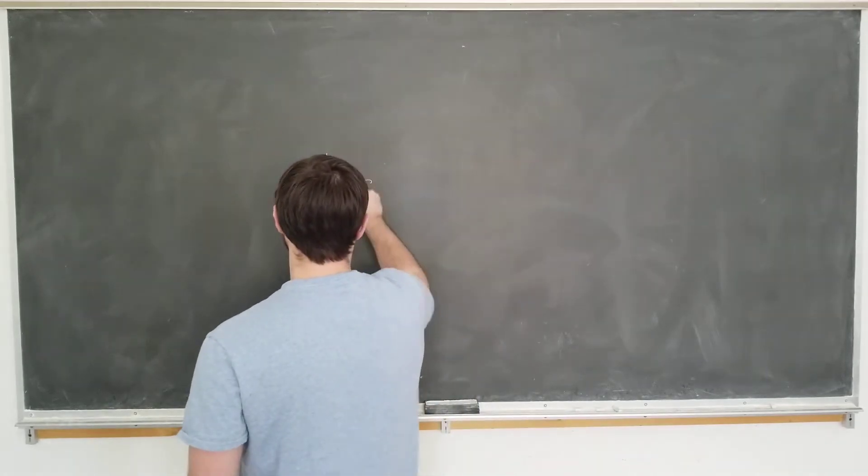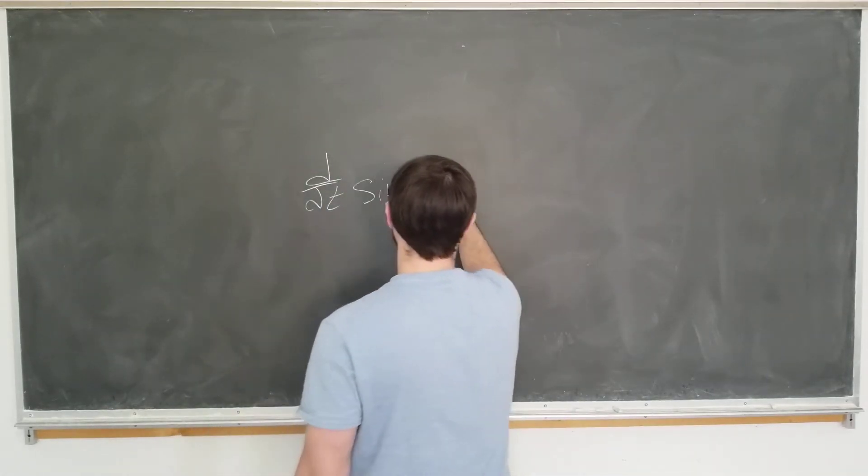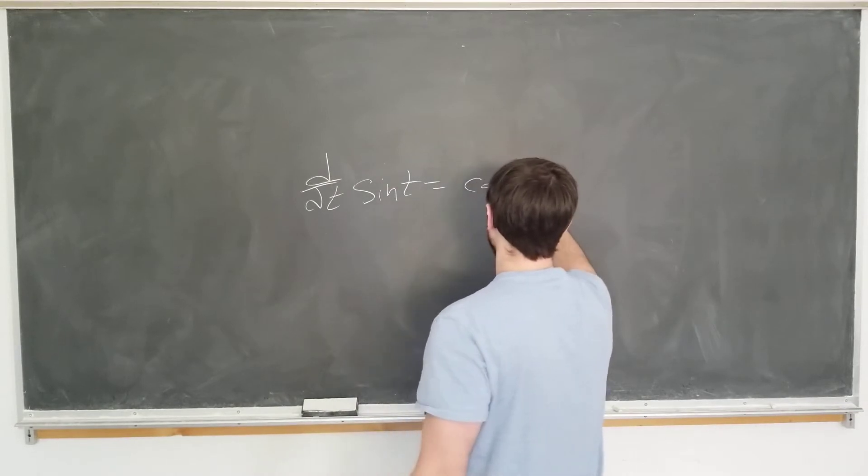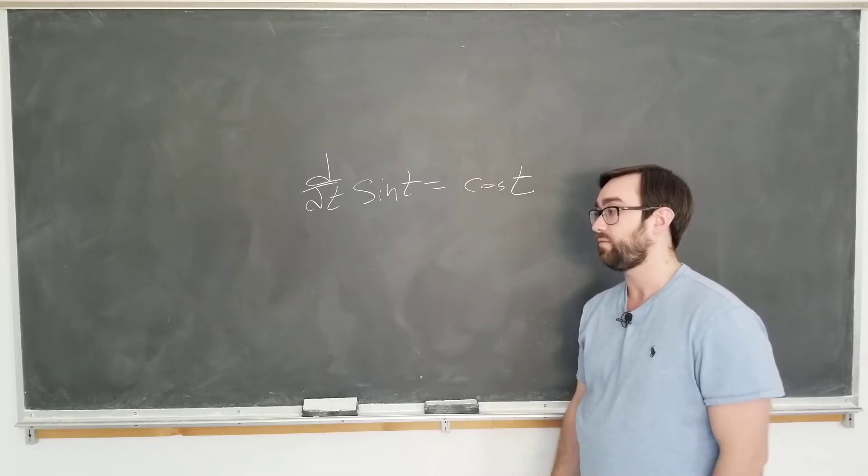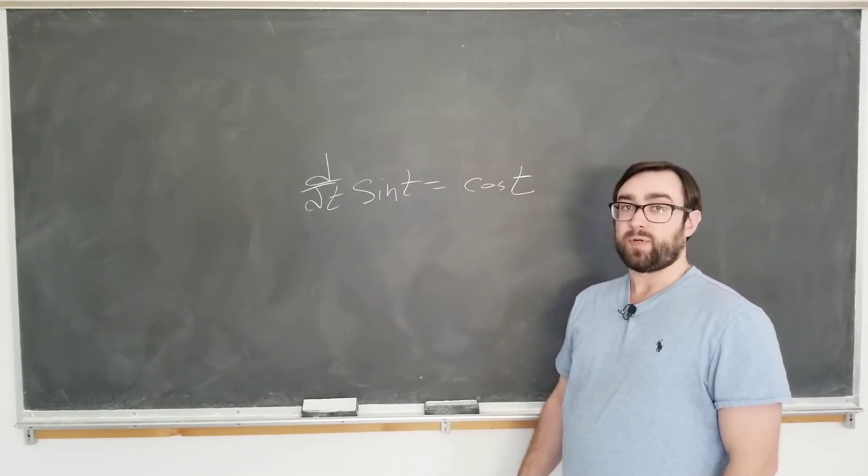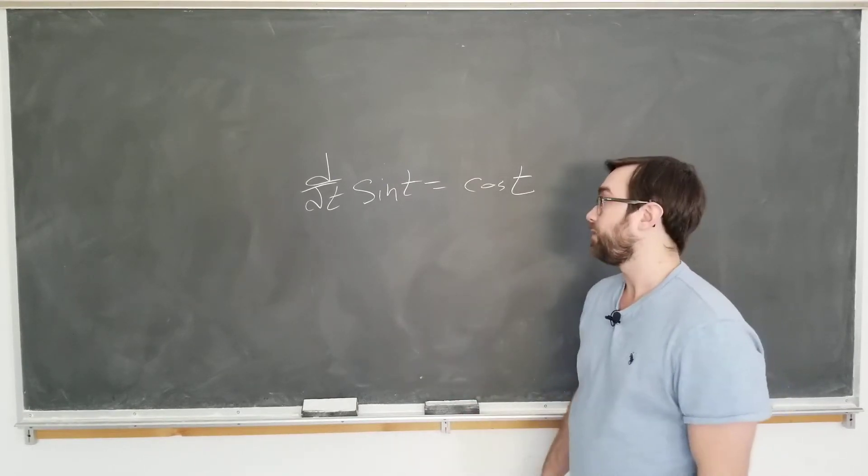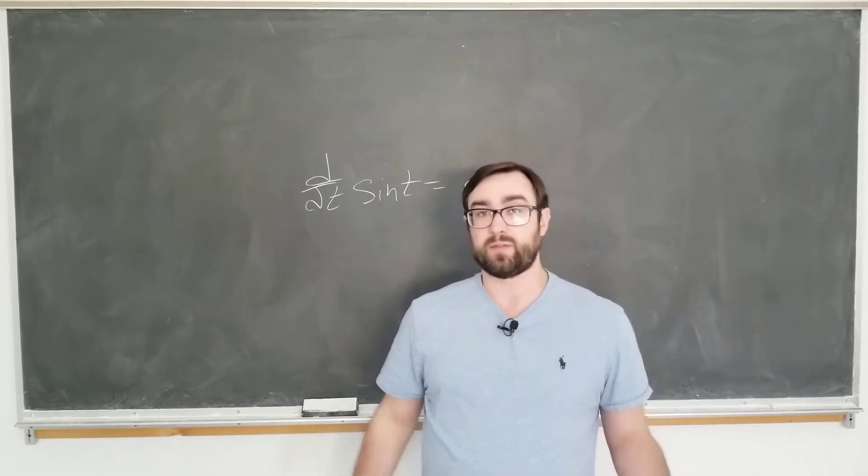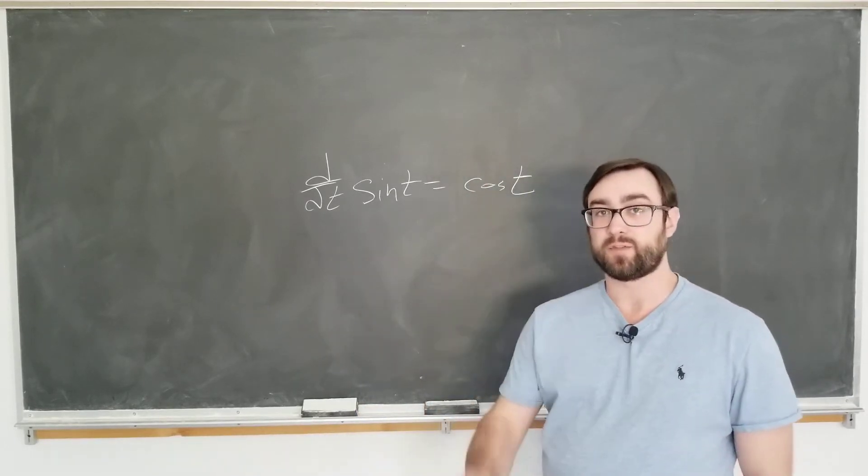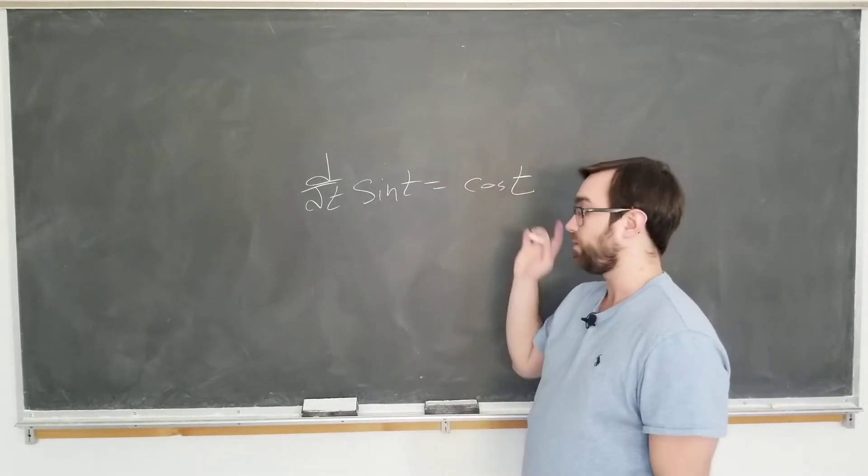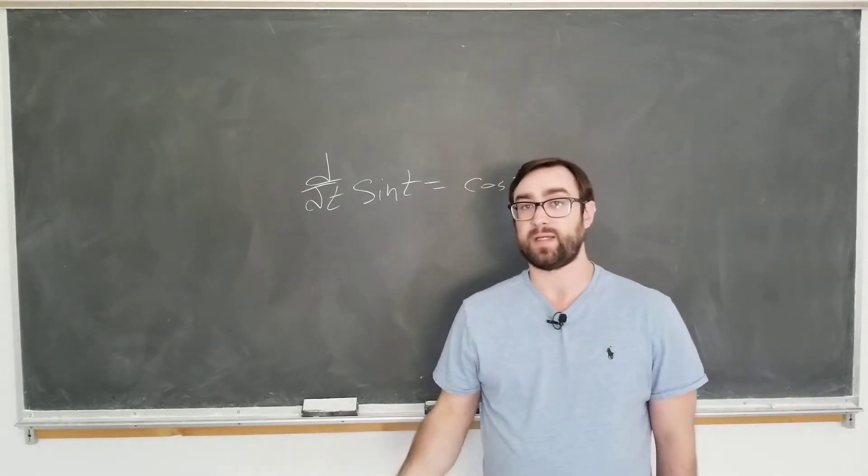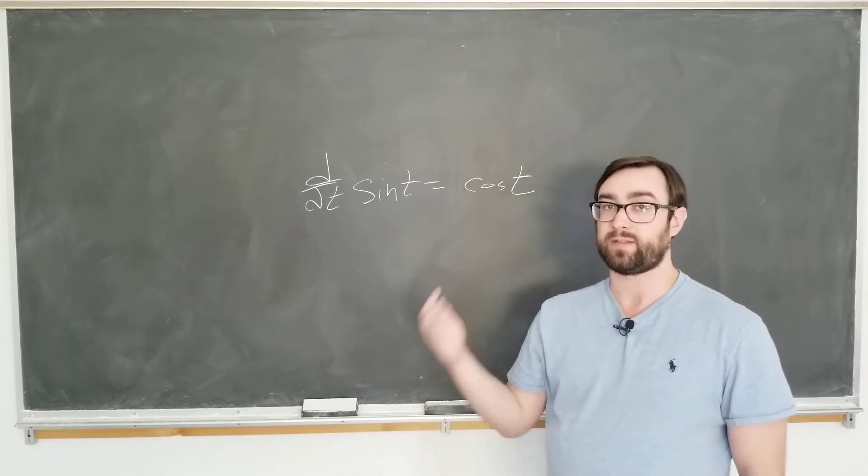d by dt of sine t is cosine t, using t here instead of x and you'll see why in a moment. This one came to me from a Reddit post that I made a few months ago. I was looking for a part two to be made to a previous video about four proofs of why sine has a derivative of cosine. I found some other ones but I didn't like them as much, so I just decided to make this a standalone video.